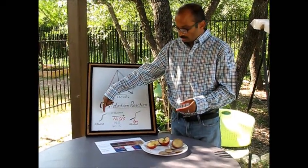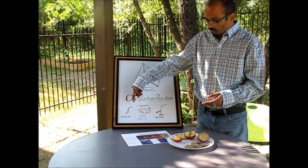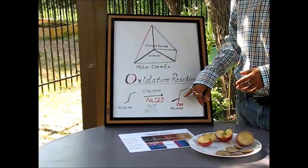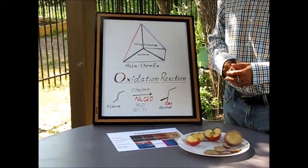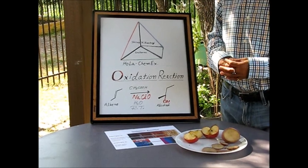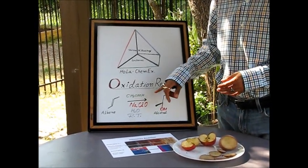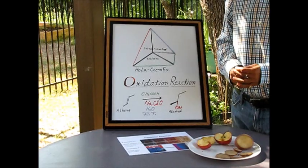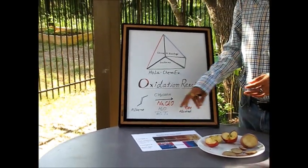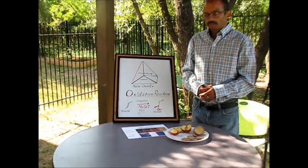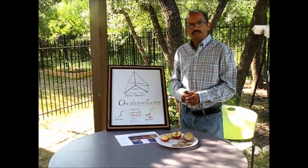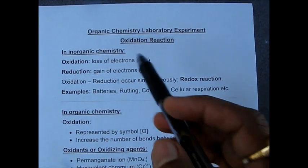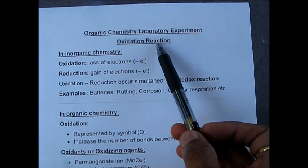We are going to run an alkene oxidation to alcohol in the presence of acetic acid and sodium hypochlorite in water at room temperature. So let's start to perform this reaction and talk a little bit more about the organic chemistry experiment, which is the oxidation reaction.